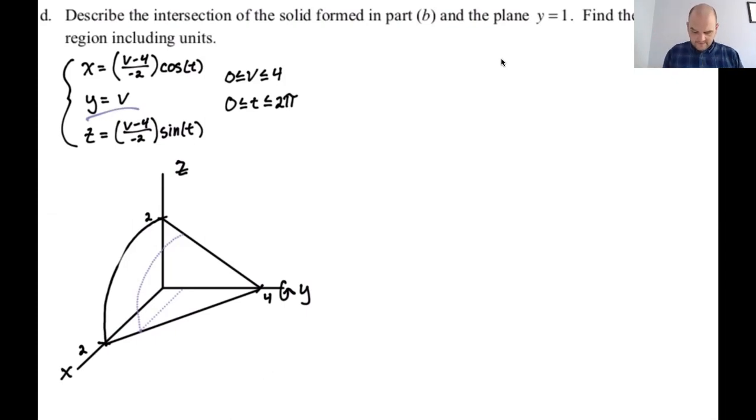So if V is equal to one, then I'm going to write parametrics for this. So V is equal to one. So it's going to be X, Y, Z, but we already said V is equal to one. So Y is equal to one. If V is equal to one, then this part is going to be one minus four is negative three divided by negative two is three halves. So I'm going to get three halves cosine of T. And then here, I'm going to get three halves sine of T. Zero T to two pi.